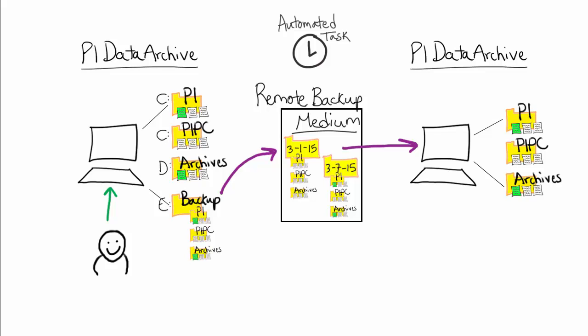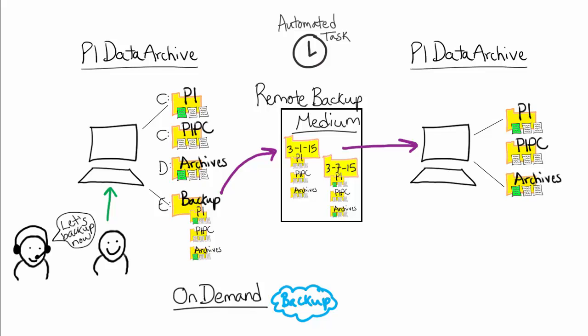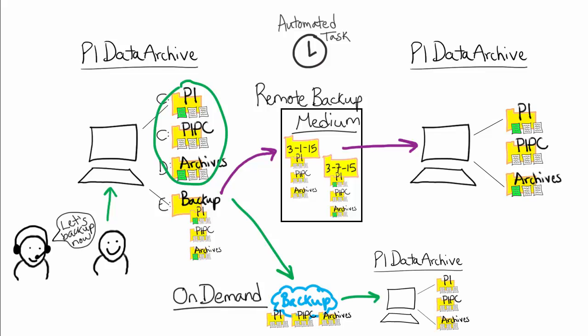However, we recognize there may be times outside of this regularly scheduled backup process that you would like to take a backup. For instance, if I'm on the phone with a tech support engineer performing certain troubleshooting or testing steps, they may request we take a backup of the PI Data Archive right then. In situations like this, you can perform what is known as an on-demand backup. Here you can specify a subset or all files in your PI Data Archive to be copied and backed up to a particular location that you can then use to restore your system on a new machine. This on-demand backup can be easily performed through a plugin to PI System Management Tools. It is important to also note that this on-demand backup will not interfere with your regularly scheduled automated backups.